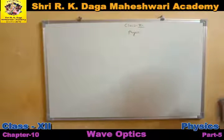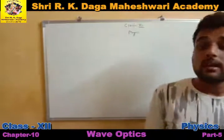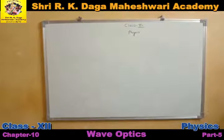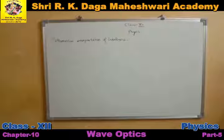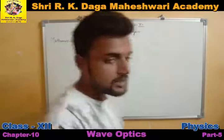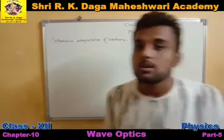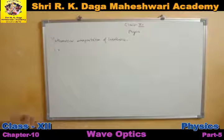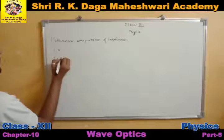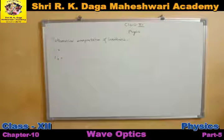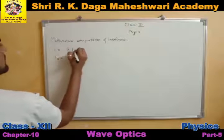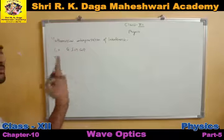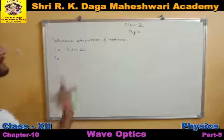Now we are going to derive a mathematical interpretation of interference. We are talking about waves, so if we are discussing interference it means we are talking about two waves. The equation of a wave can be given by y = a sin(ωt), where a is the amplitude and ω is the phase at a particular instant of time t. You have studied waves and oscillations in a previous class, so you should already know this wave equation.